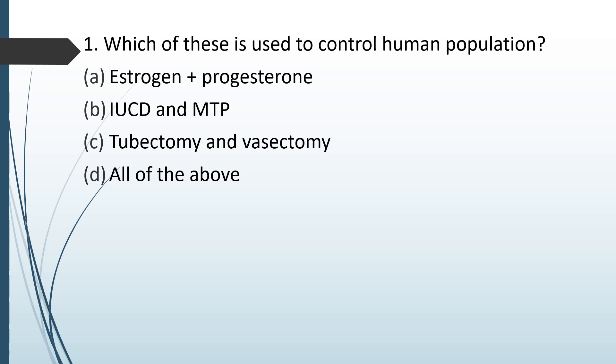Which of these is used to control human population? Option A: estrogen plus progesterone. Option B: IUCD and MTP. Option C: tubectomy and vasectomy. Option D: all of the above.